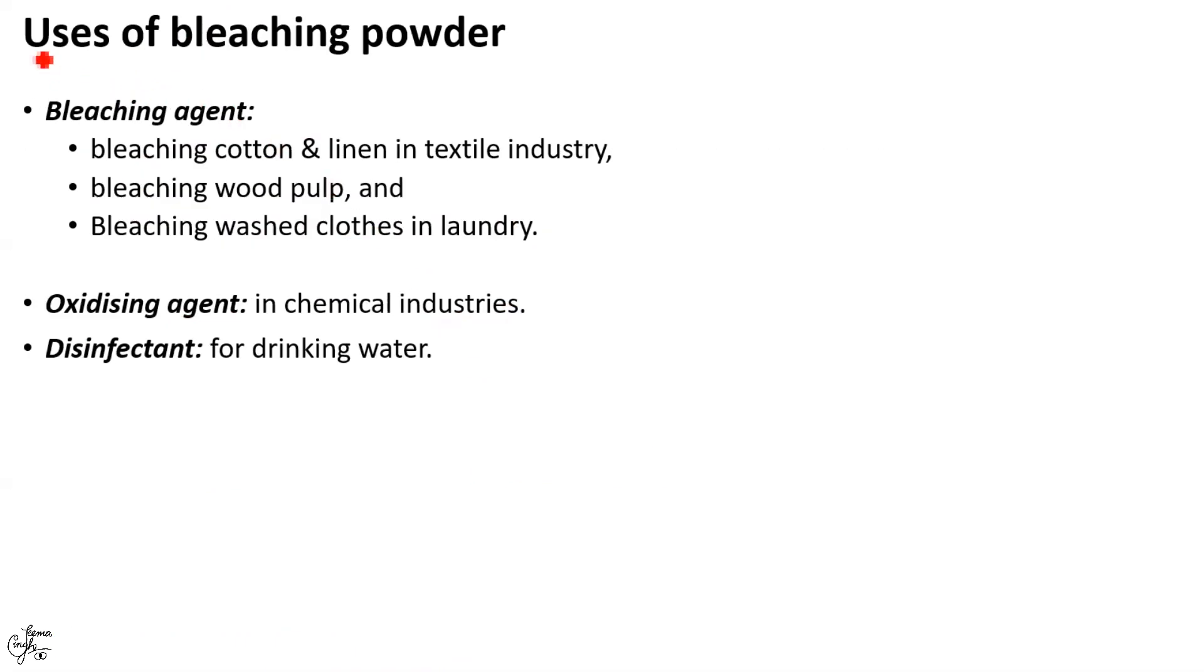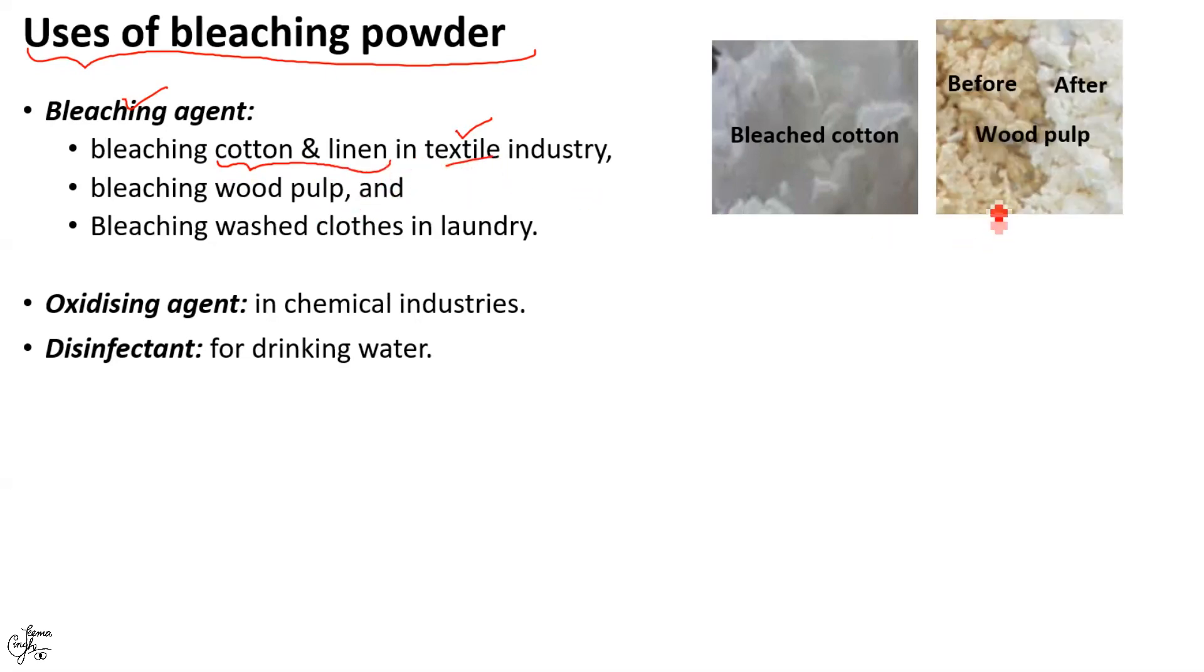Moving on to the uses of bleaching powder. It is one of the most useful bleaching agents particularly in textile and paper industries. I am sure you are aware what bleaching means. It means to whiten or lighten color or to remove stains. Thus, it is used to bleach cotton and linen in textile industries, wood pulp in paper industries and wash clothes in laundries.